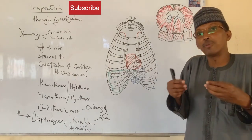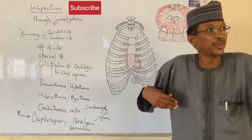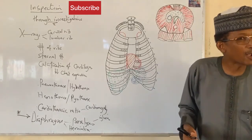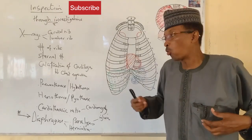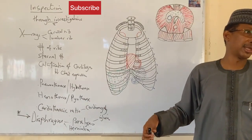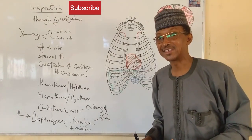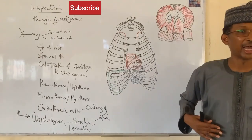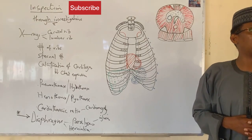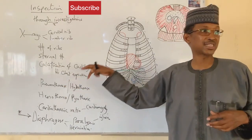One major problem with rib fractures is that the fractured ends can puncture the lung tissue. Since the lungs contain air, once the fractured rib end breaks any part of the lung, the air will come out and the lungs will deflate. The air will then enter the pleural cavity — that is what we call pneumothorax, which I will discuss later.